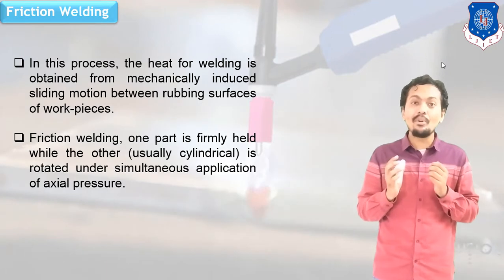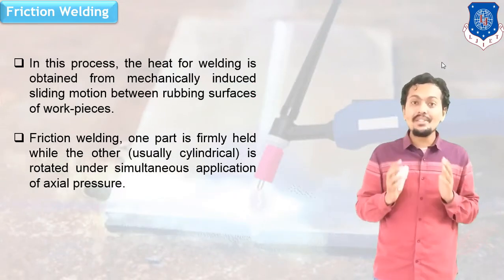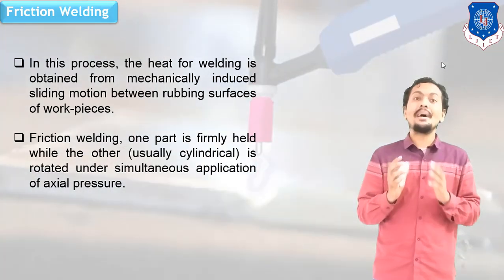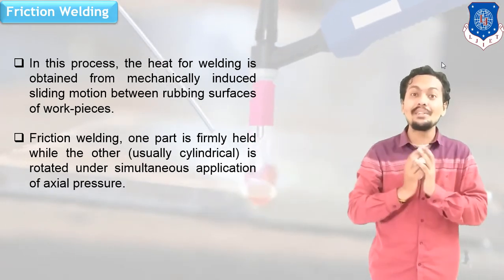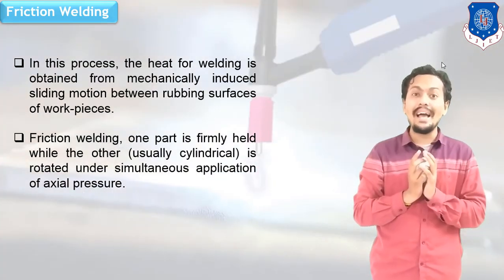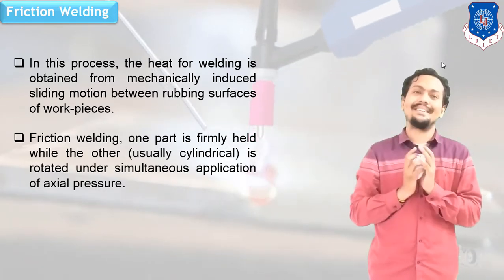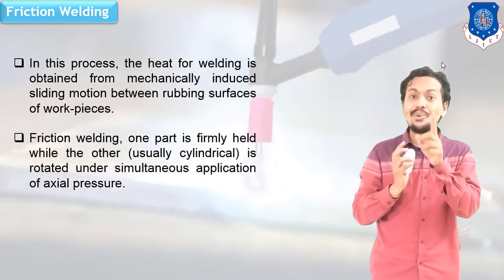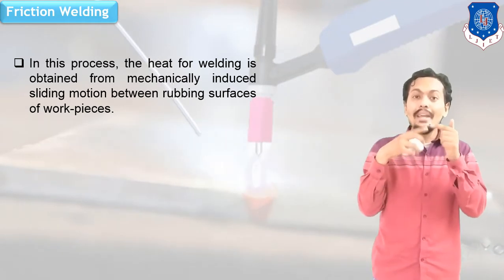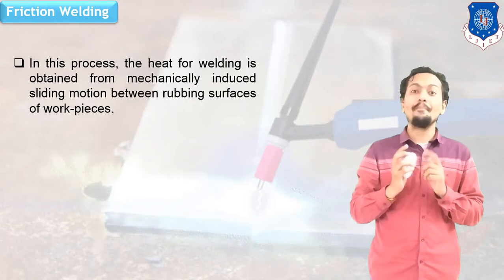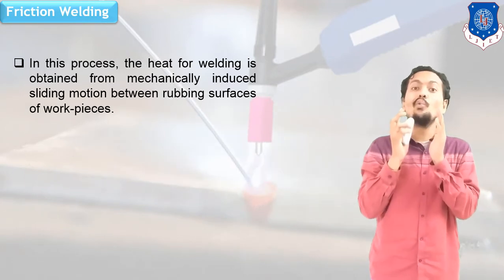Here I have mentioned the friction welding process. This is also one Special Welding Process. In friction welding, as per the name, heat is generated with the help of friction, and this friction is utilized to join two parts together. Friction is used for generating the heat. By rubbing of two parts, friction is generated, and this friction can be utilized for joining of two rods or two parts together.